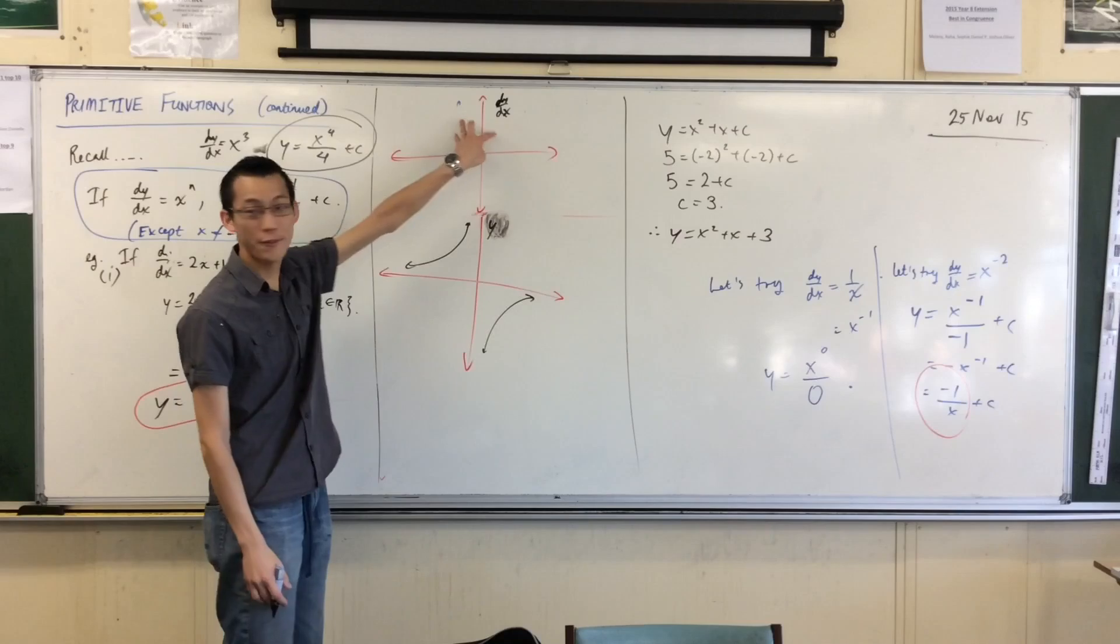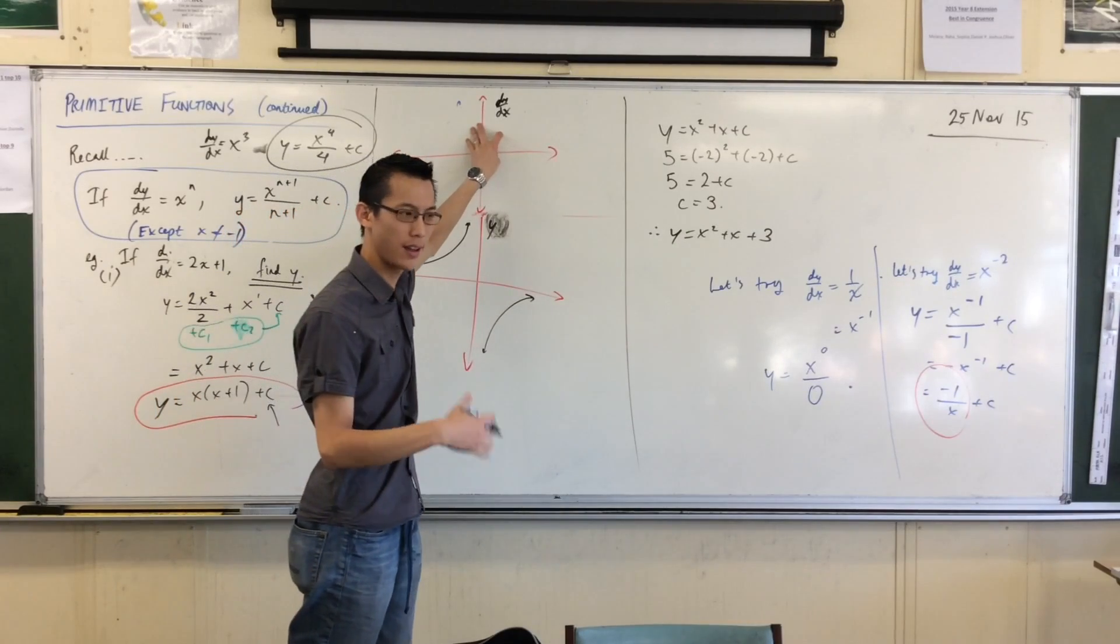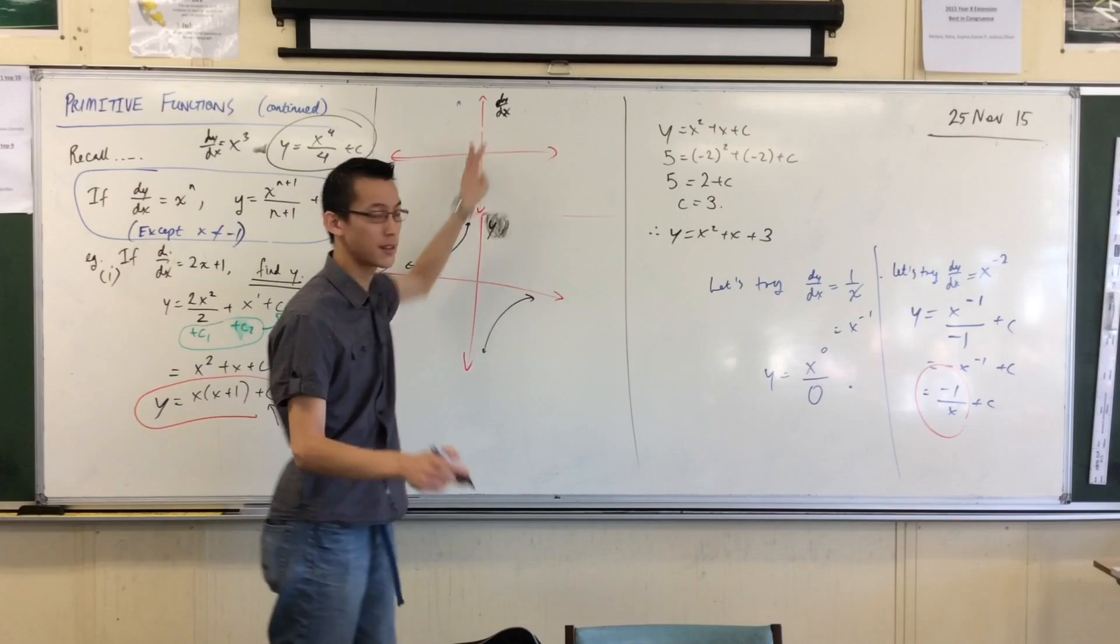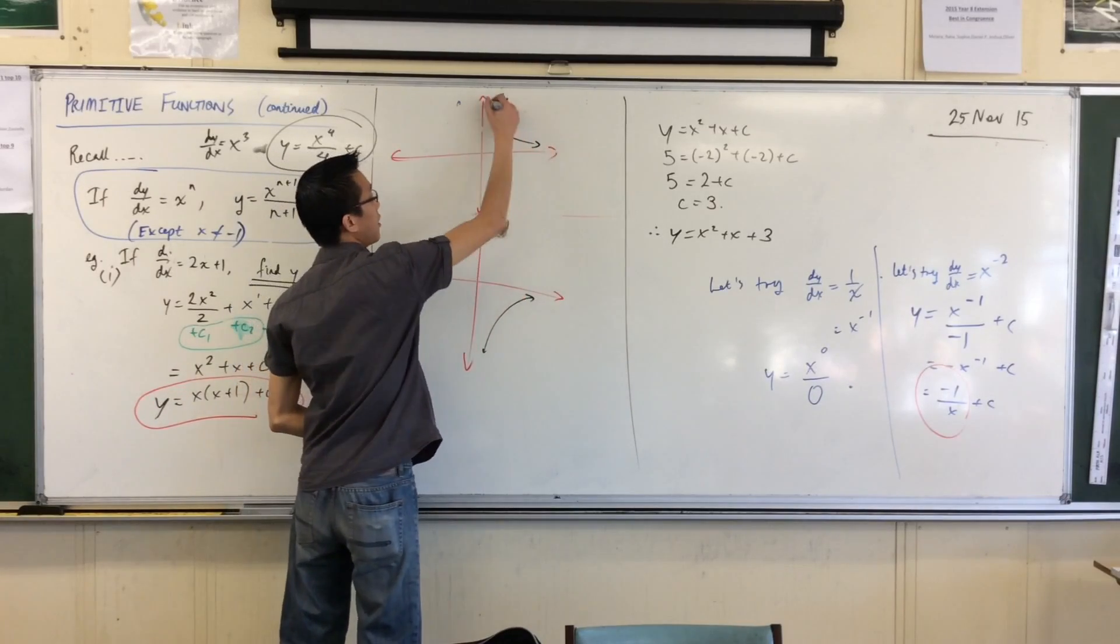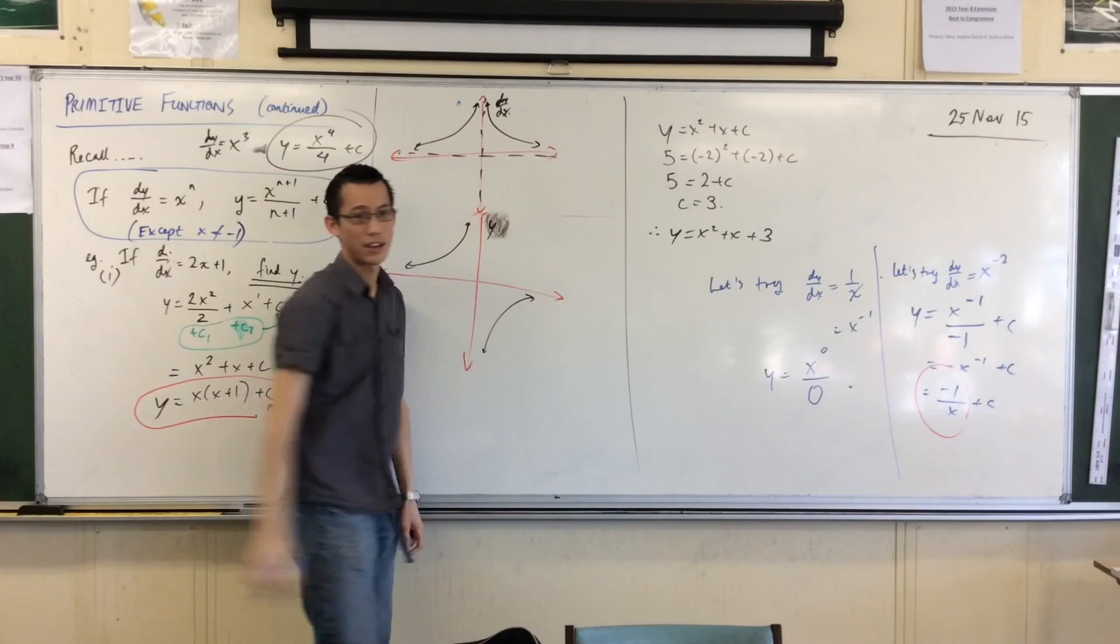Therefore, since x squared is positive, 1 over x squared is also positive. The reciprocal of a positive number is itself positive. Does that make sense? So in fact, the graph you're getting is this guy. And you've got asymptote there, asymptote there. You can go ahead and check y.